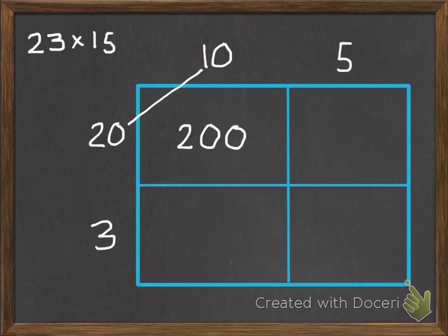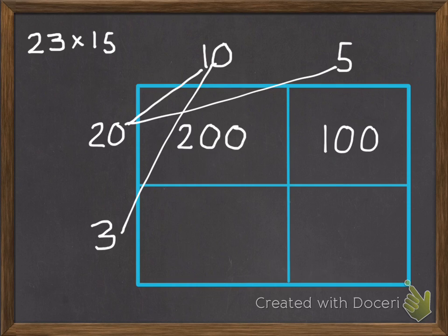So for this first box, the number to the left is 20, the number above is 10. 20 times 10 is 200. And for our next box to the right, the number above it is 5, the number to the left is 20, so 20 times 5 is 100. In our bottom left box, the number above it is 10, the number to the left is 3. We multiply those: 3 times 10 is 30. And then for our last box, the number above it is 5, the number to the left is 3, so 3 times 5 is 15.